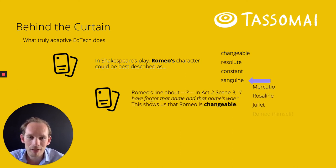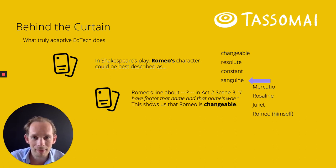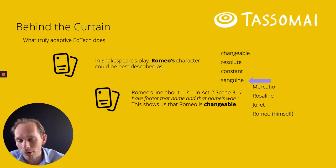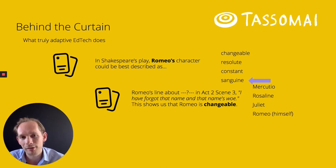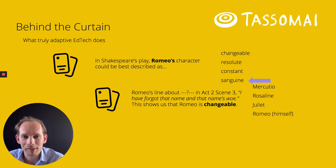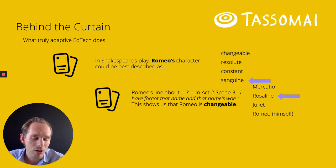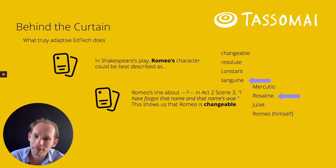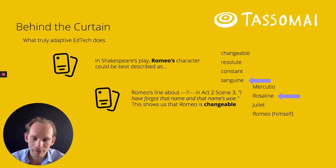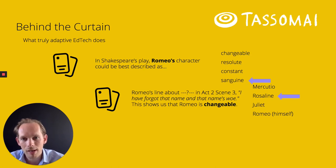Romeo's line in Act 2, Scene 3 — 'I have forgot that name, and that name's woe' — shows us that Romeo is changeable. The question asks: who is the person he's talking about? The answer is Rosaline. Even if we answer correctly, it's still going to ask that again and bring back the other question — really drilling that and making sure students know that fact about that character.